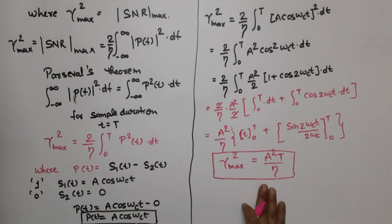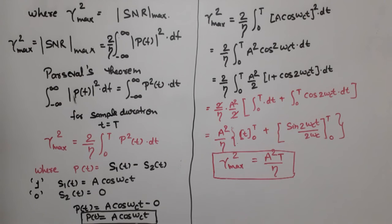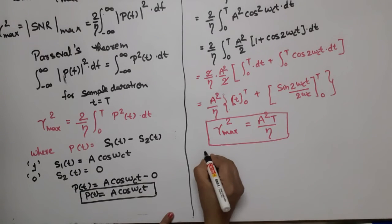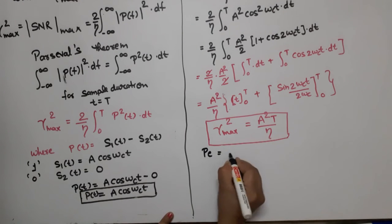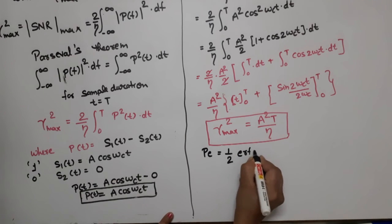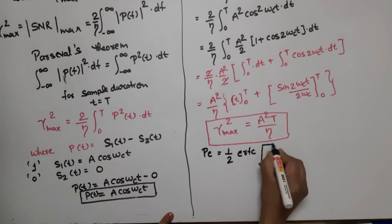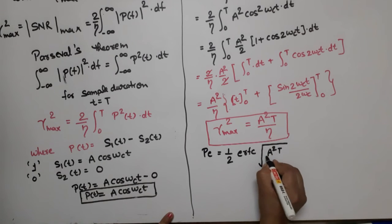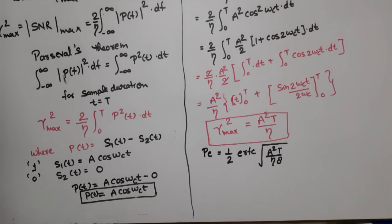Now we substitute this value into our probability of error equation. What do we get? The probability of error is equal to one-half times the complementary error function of the square root of A²T divided by (8·eta).